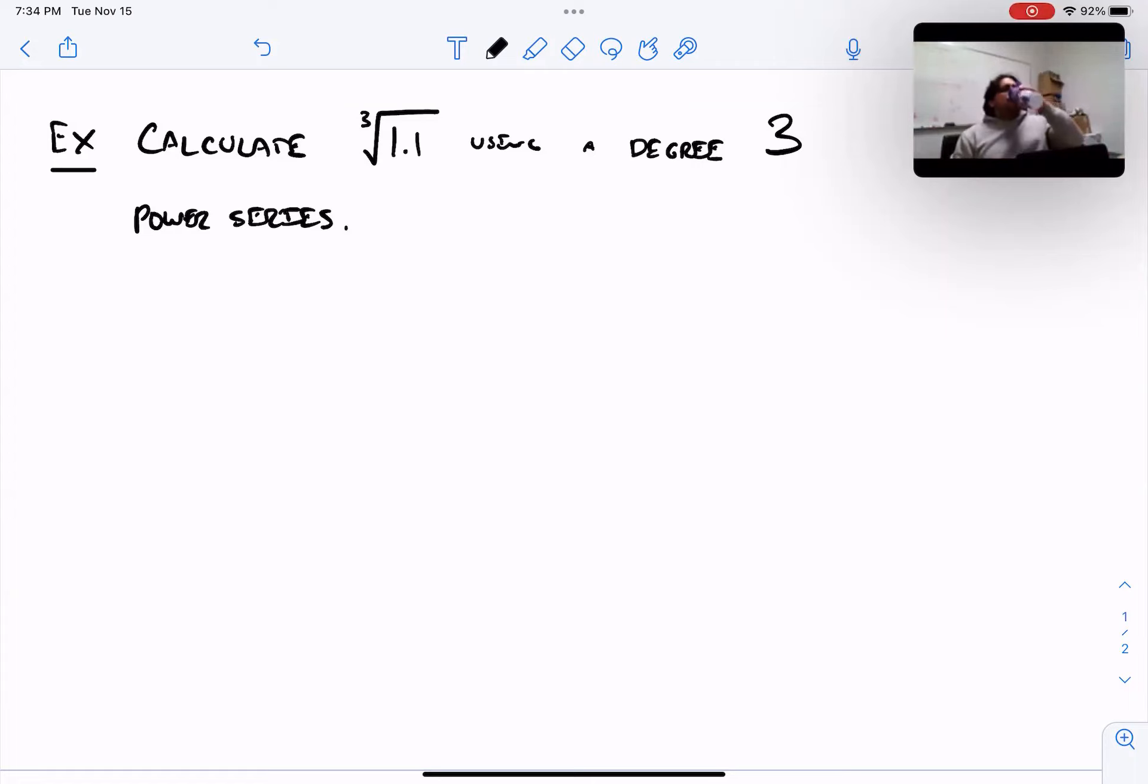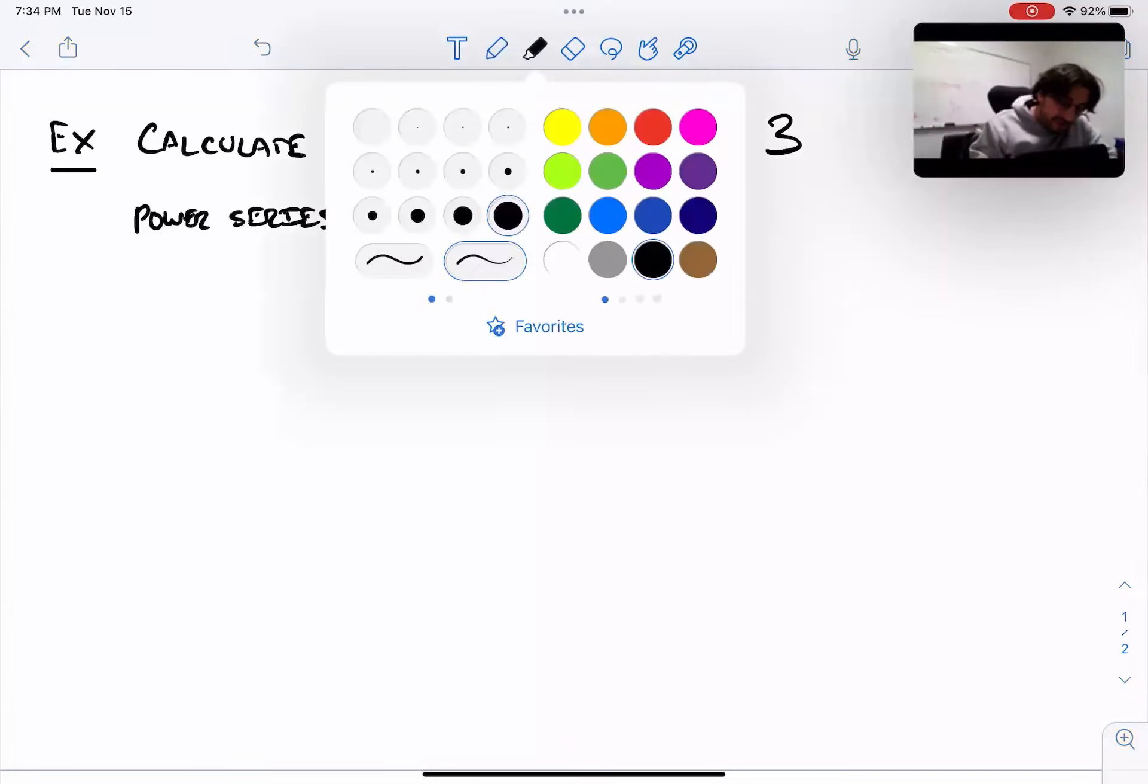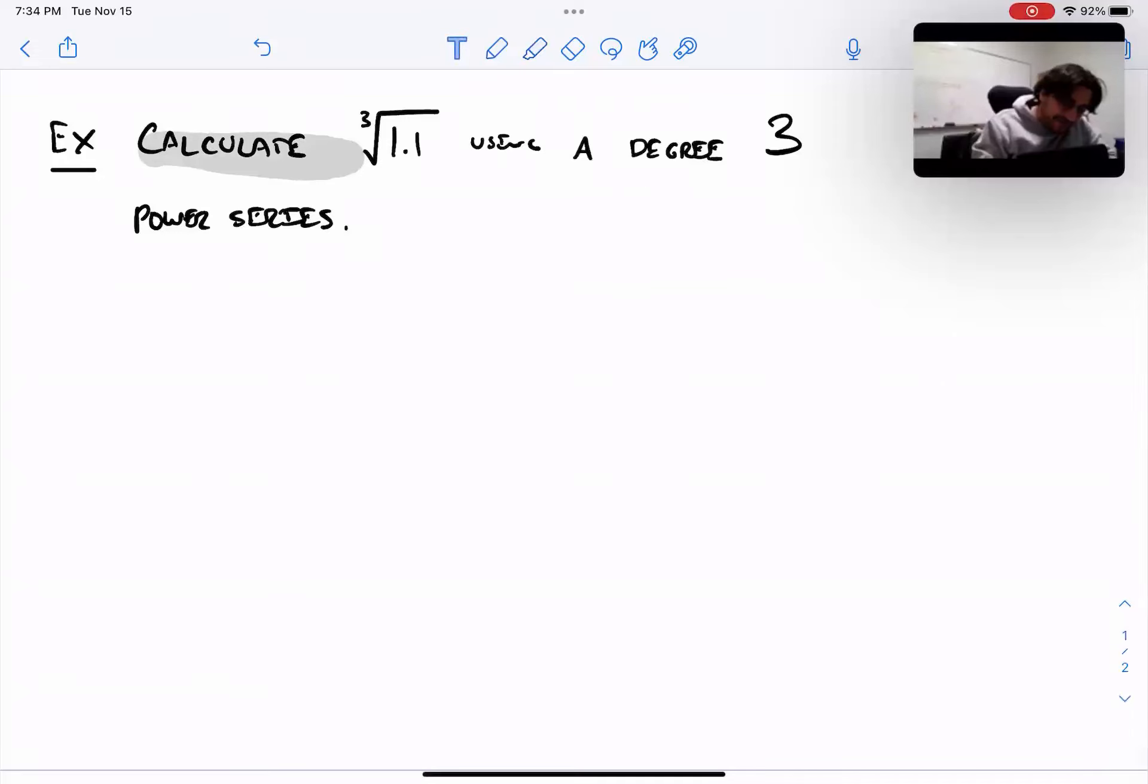Power series get more and more accurate as you use more terms. But here we're saying, just calculate this using a degree 3 power series. A more honest way to say what we're doing is estimate. Let's estimate the value of this number using a degree 3 power series. If you take all infinitely many terms, you'll get exactly that value, but let's estimate it using finitely many terms.